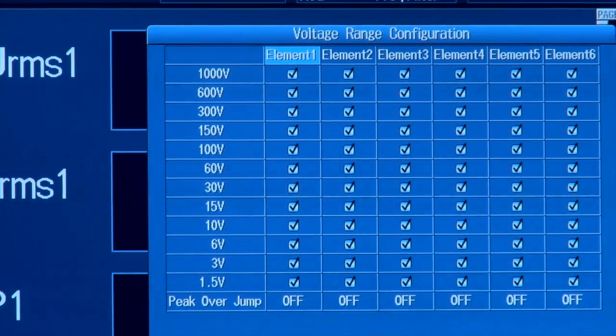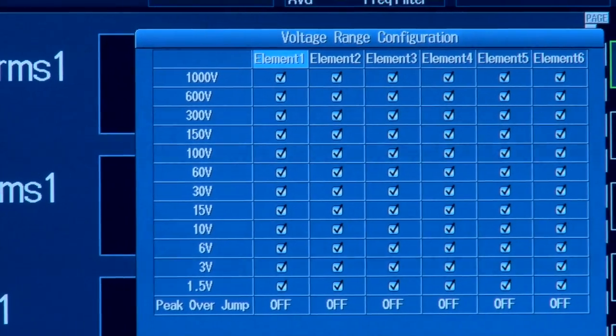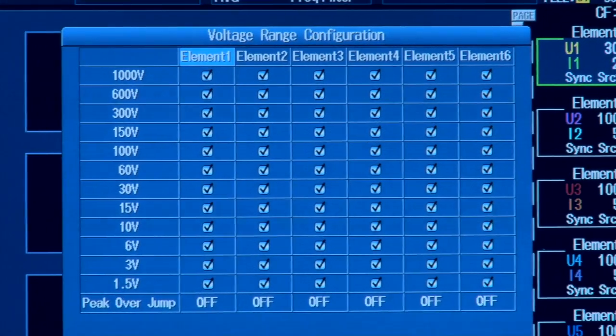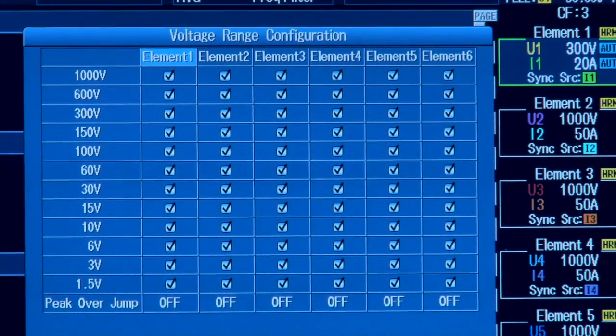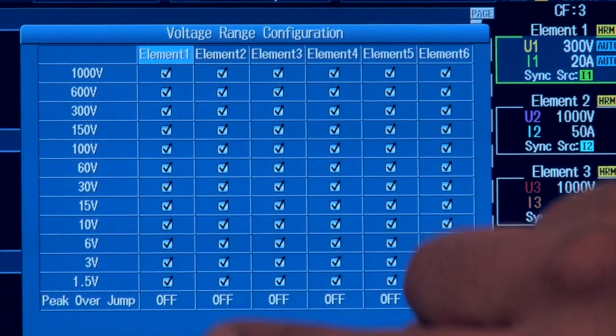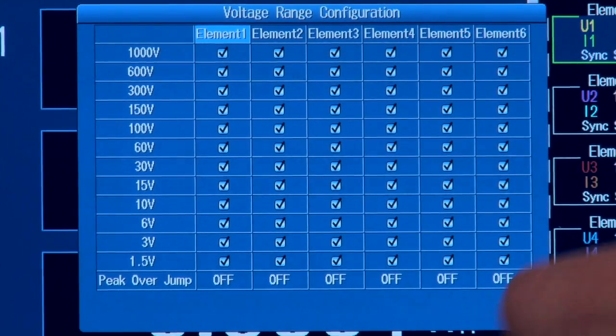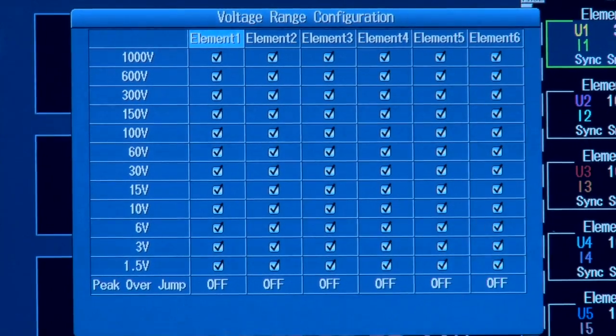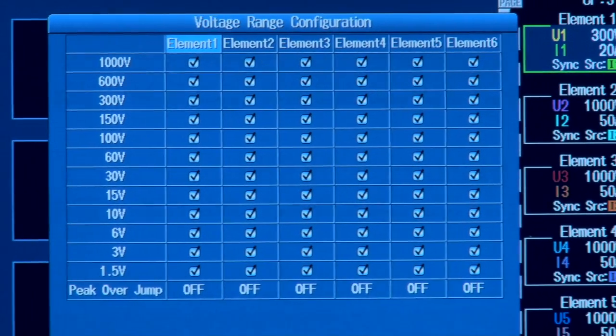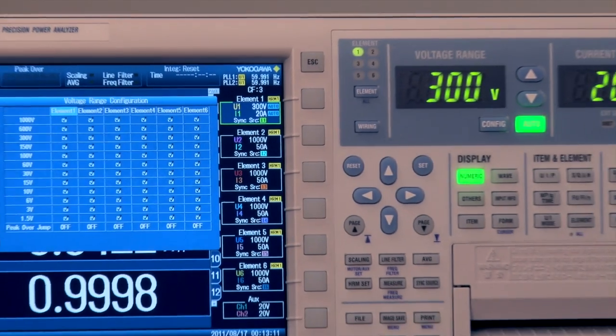By deselecting unwanted ranges you minimize the amount of time it takes for this unit to stabilize through the ranges and start making effective measurements. If you're doing repetitive testing from zero to say 600 volts, you can take out any of the unwanted ranges, therefore it would go from zero to 600 volt range and then your measurements would be ready to go.